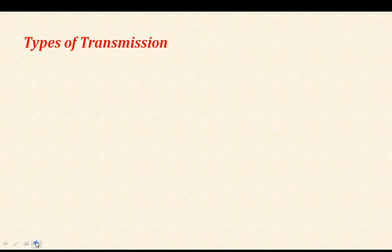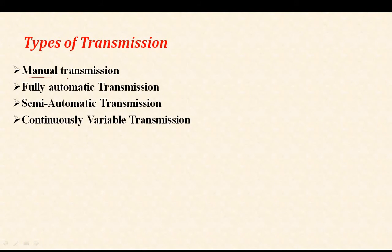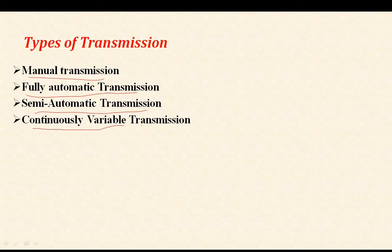In the next slide, we will discuss various types of transmission system. There are: manual transmission system, fully automatic transmission system, semi-automatic transmission system, and continuously variable transmission system. We will discuss each and every type of transmission system one by one in coming lectures.